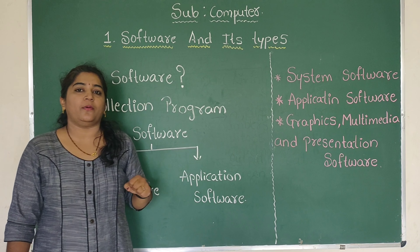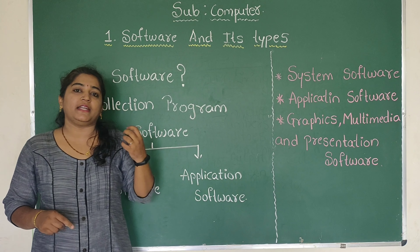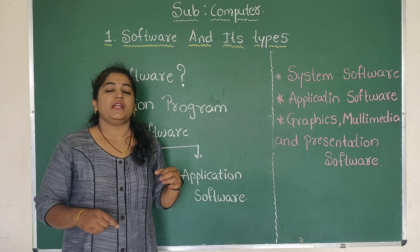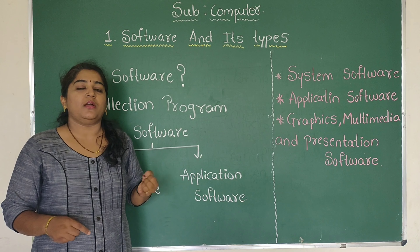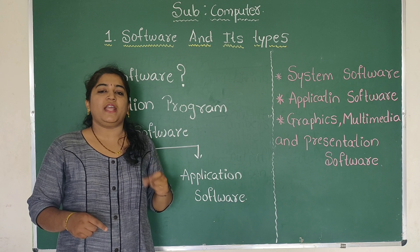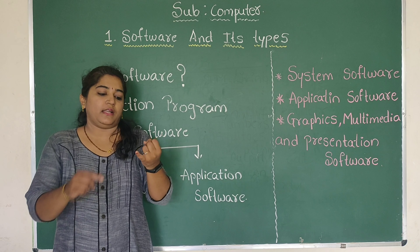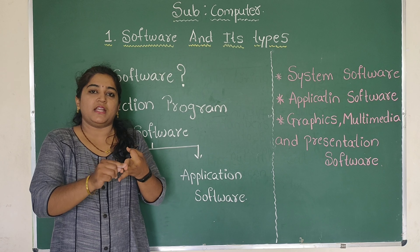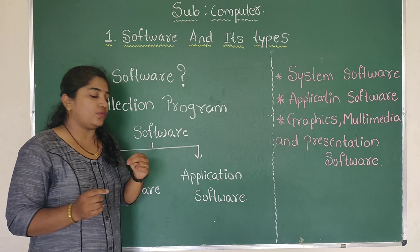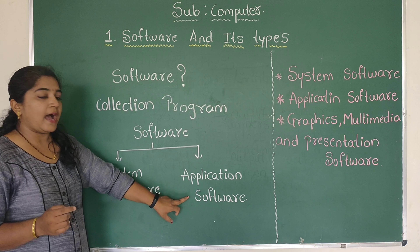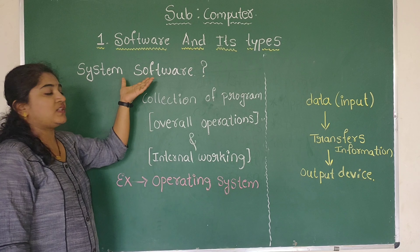So now, what is software? Software is a collection of programs that tells the computer to perform operations like input, processing, and output. Just as the brain gives instructions to our body, similarly software gives instructions to the computer. A good example is a calculator, which performs multiple operations like addition, subtraction, and multiplication — it is a collection of programs, so we call it software. Software is of two types: system software and application software.